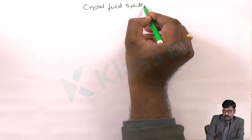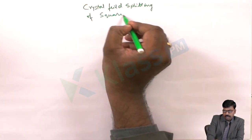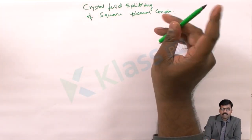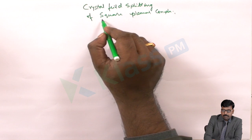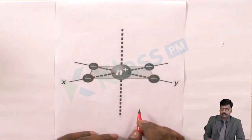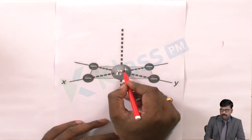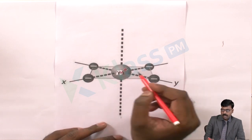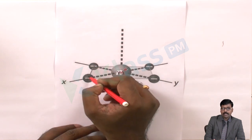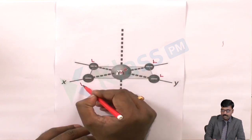Crystal field splitting of square planar complex. Before going for the splitting of square planar complexes, let us see what is the structure of square planar. In crystal field theory, the metal complex is considered as a point charge of a positive ion, and along the x and y planes, the ligands will approach towards the metal ion.